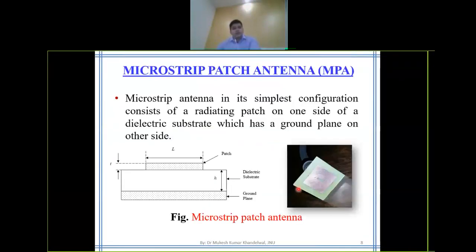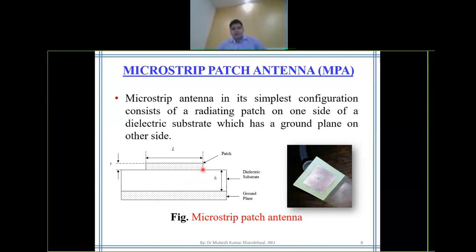The microstrip patch antenna is an advanced planar form of antenna. In a microstrip patch antenna, there is a conducting patch and a conducting ground separated by a dielectric substrate. It evolved around the 1970s, after which lots of research was carried out in the field of microstrip antennas.